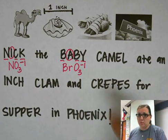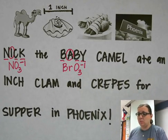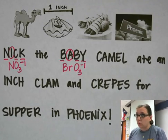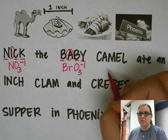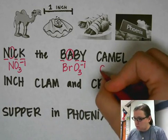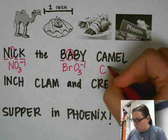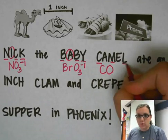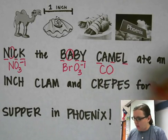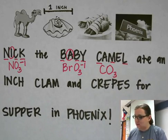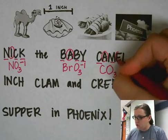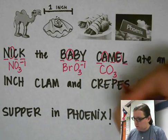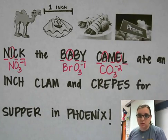'Camel' is going to be for carbonate, which starts with carbon. We have oxygens in it — specifically three consonants, so three oxygens. And then we have two vowels, so that's going to be a negative two charge.